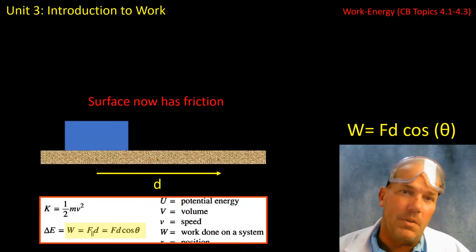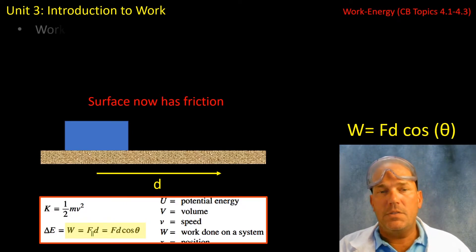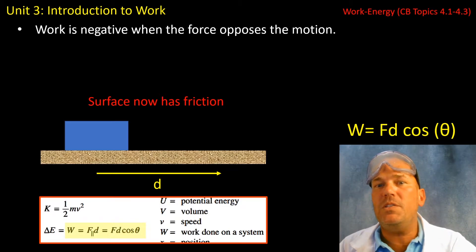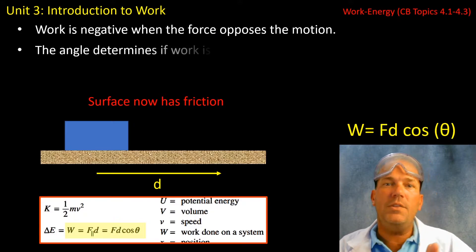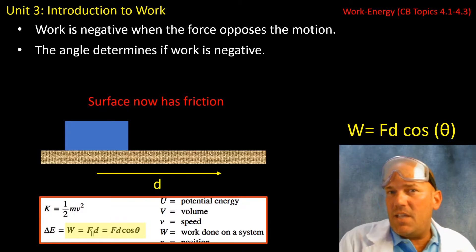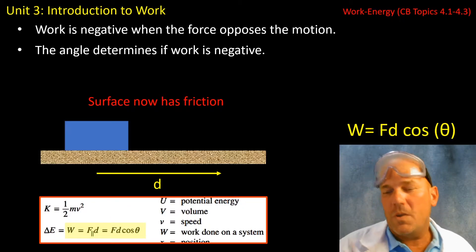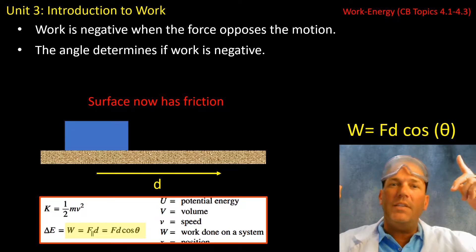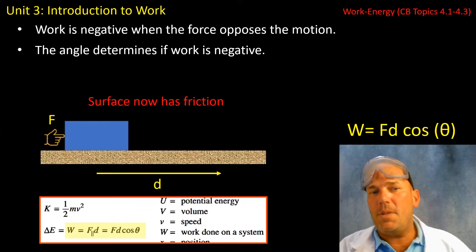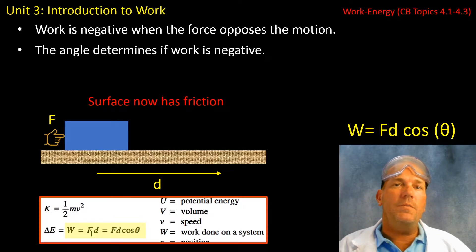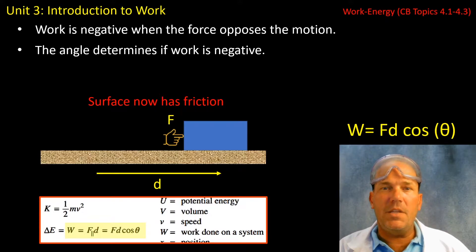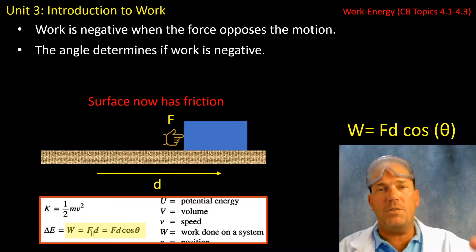Let's look at another example. In this example, we do have friction on the surface. Let's look at an example in which we will get something called negative work, in which the force is opposing the direction of the motion. This object is going to be accelerated to the right. Now the angle is what determines the sign — in other words, the angle is what determines if work is positive or negative. When you use this equation, you're just going to take the absolute value for the force and the displacement, because it's the angle. Here we're going to apply a force to this object, except now there's a force that's opposing the motion — the force of kinetic friction.